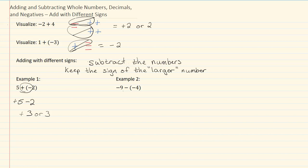In example two, again I have the double signs, so I always want to simplify those first. So our problem then is negative nine plus four. We have different signs, so we're going to subtract the numbers. Nine minus four would be five. Our larger number is negative, so this means we have a negative five.